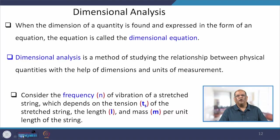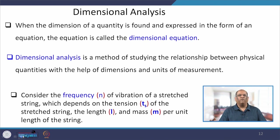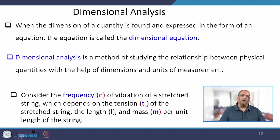Dimensional analysis: when the dimension of a quantity is expressed as an equation, that is called a dimensional equation. Dimensional analysis is a method of studying the relationship between physical quantities using dimensions and units. For example, the frequency of a stretched string depends on the tension, the length of the string, and the mass per unit length.